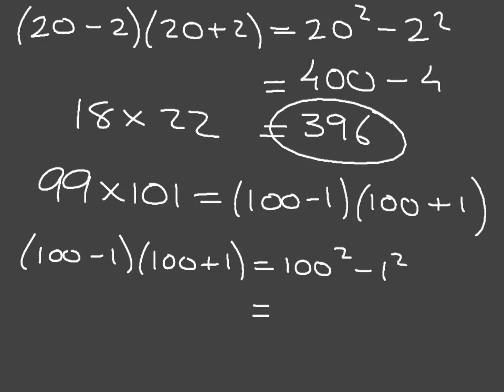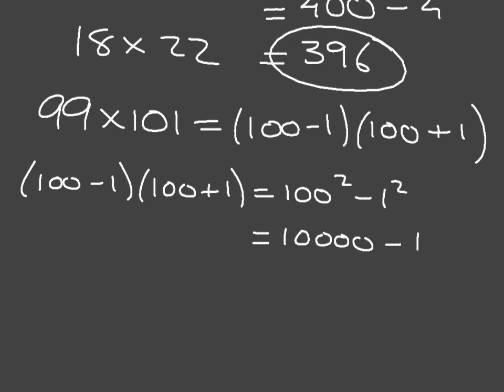100 squared is equal to 10,000, and 1 squared is just equal to 1. And so we quickly see that this answer is going to be 9,999. And there we go.